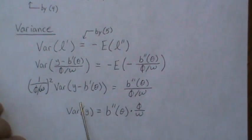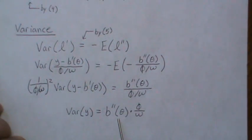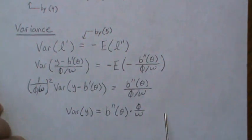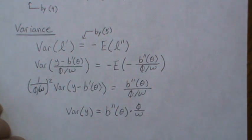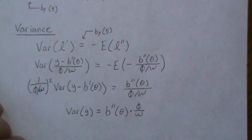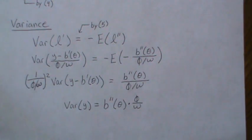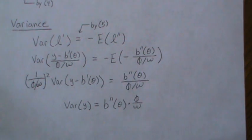Since variance is always greater than or equal to zero, that tells us something important about B''(theta) — and we're going to make use of that in the next video. That's all for today; hopefully you enjoyed it. Please like the video and subscribe so you don't miss the next one — thanks, bye!